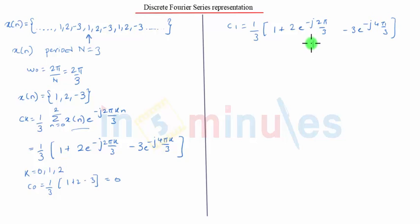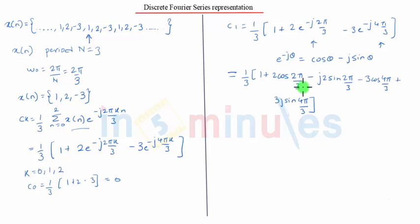Now we expand these two terms using the concept e raised to minus j θ equals cos θ minus j sin θ. After expanding accordingly, we substitute each value: cos 2π by 3, sin 2π by 3, cos 4π by 3, and sin 4π by 3. We get the final value.